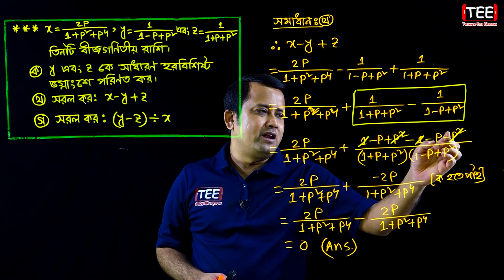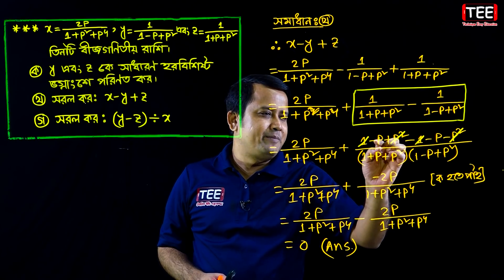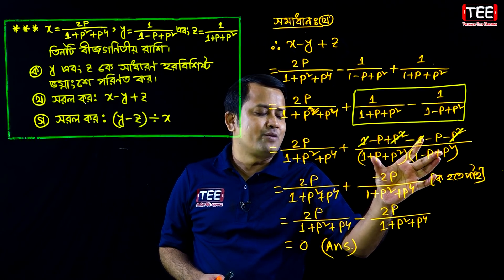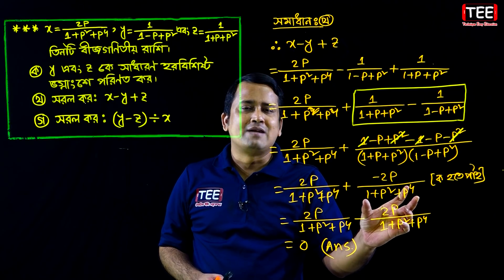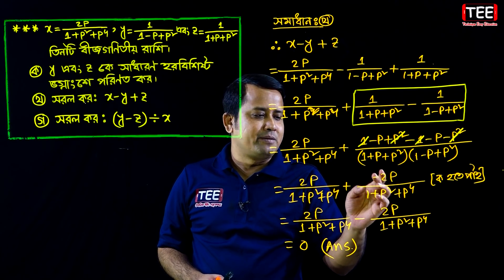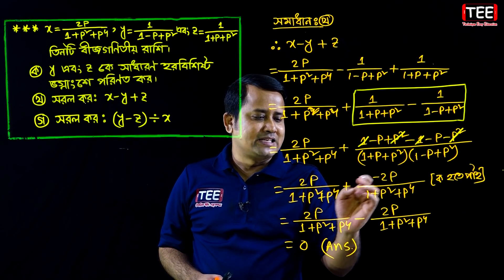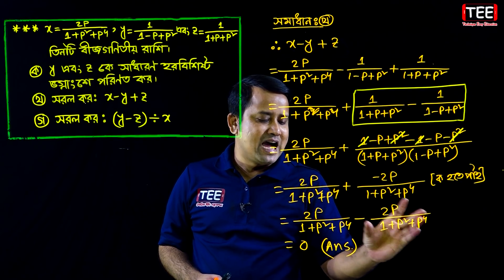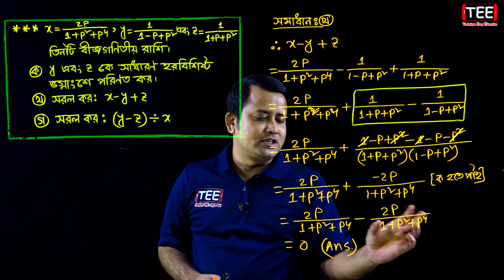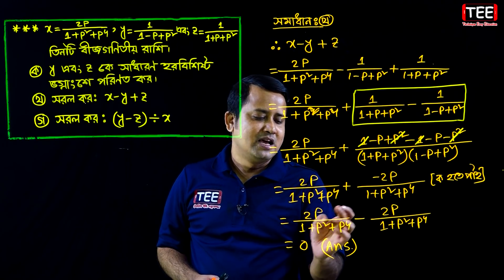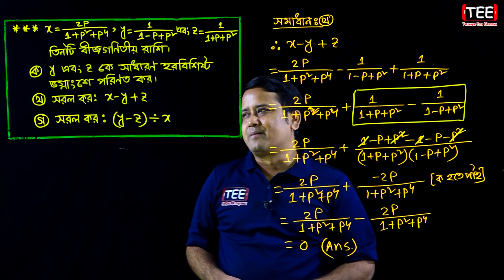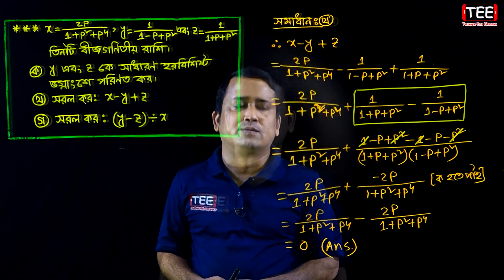So we have minus p, minus p, minus 2p, and eta is equal to 1 plus p square plus p to the power 4. Then we have minus, minus, minus. So eta is equal to minus — eta is equal to plus. So eta is equal to zero.